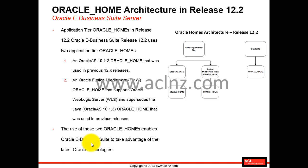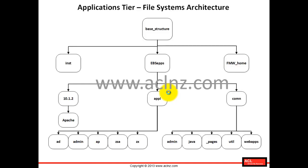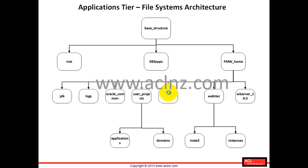In terms of key changes: all major services are now started out of the Fusion Middleware Oracle home instead of the 10.1.3 Application Server based Oracle home. The Fusion Middleware Oracle home — sometimes referred to as the web or Java-based Oracle home — replaces the Oracle AS 10.1.3 based Oracle home used in E-Business Suite 12.1.x releases. These are the key differentiators in terms of file system architecture, which will be explained in the next video.